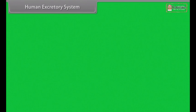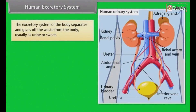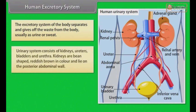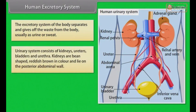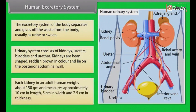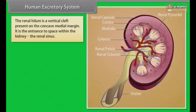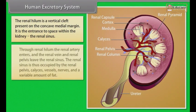Human Excretory System: The excretory system separates and expels waste from the body, usually as urine or sweat. The urinary system consists of kidneys, ureters, bladder and urethra. Kidneys are bean-shaped, reddish-brown in color and lie on the posterior abdominal wall. Each kidney in an adult human weighs about 150 grams and measures approximately 10 cm in length, 5 cm in width and 2.5 cm in thickness. The renal hilum is a vertical cleft on the concave medial margin and is the entrance to the renal sinus.